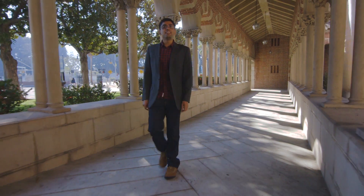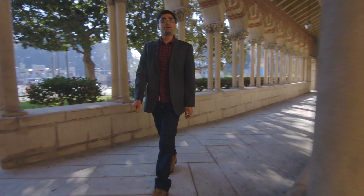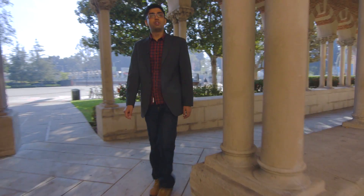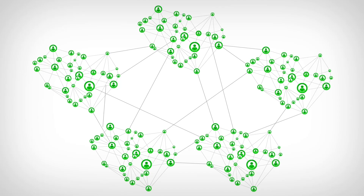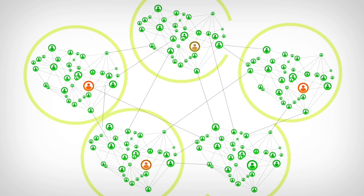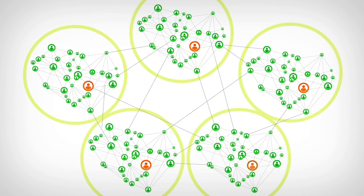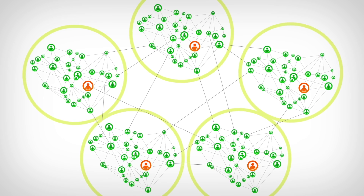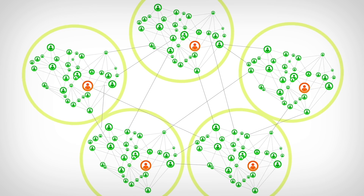How does the Heal algorithm recommend the most influential peer leaders? Heal partitions the social network to find closely connected communities and selects the best peer leader from each one.